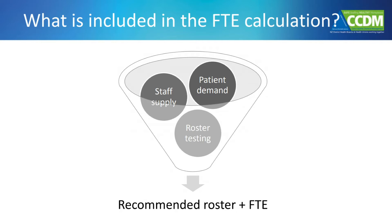The acuity data provides the patient demand information for the FTE calculation, while information about the staff on the ward provides the staff supply information. Both are entered into the CCDM FTE software system, which calculates whether staffing supply could meet patient demand over the last 12 months and then recommends a roster to ensure this happens.